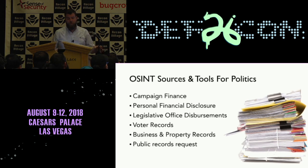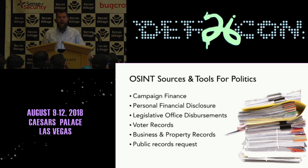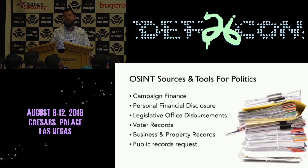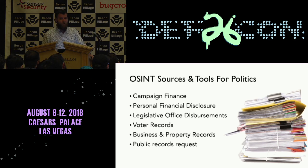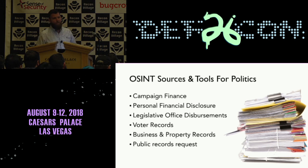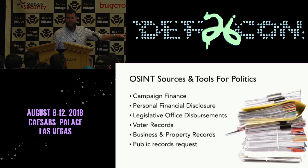The OSINT tools we're going to talk about first: campaign finance records. Every dollar that goes in and out of any political committee is going to be publicly recorded. The Federal Election Commission just recently put out an API to pull all of this information — I find it very useful. I put together a little webpage on my GitHub that allows you to quickly search all of this data. Personal financial disclosures — every elected official is going to have to disclose their finances.